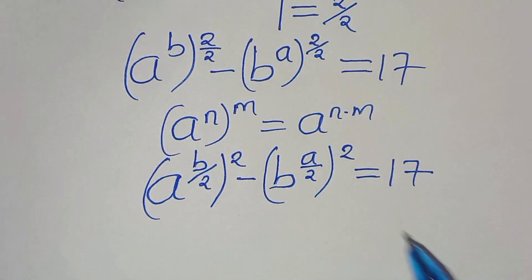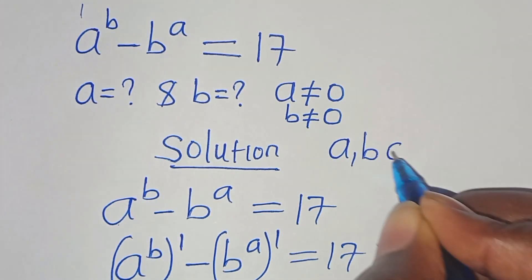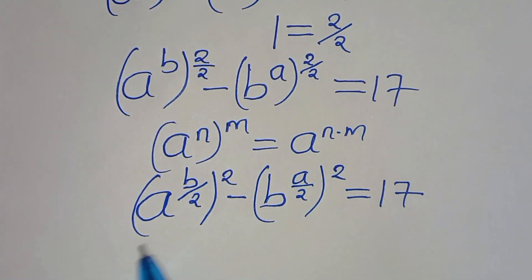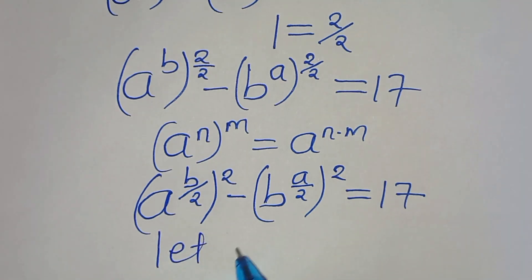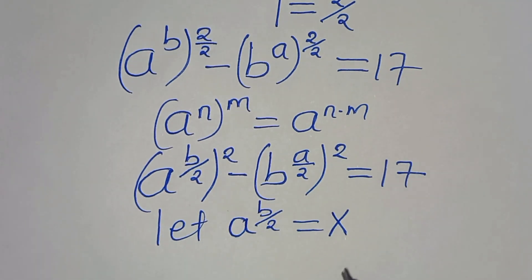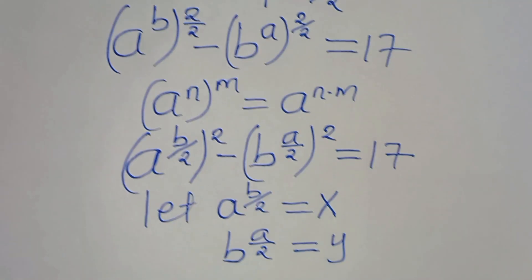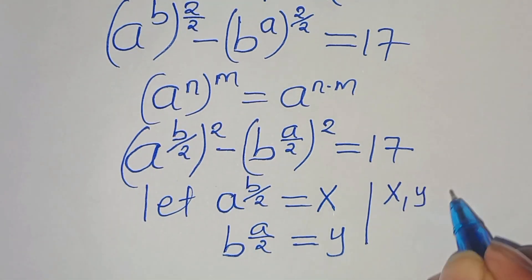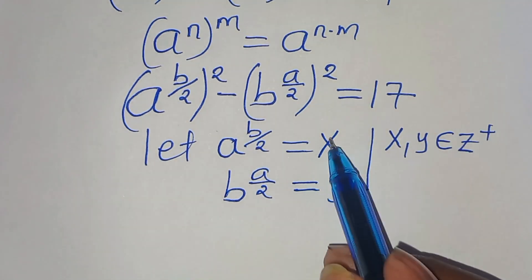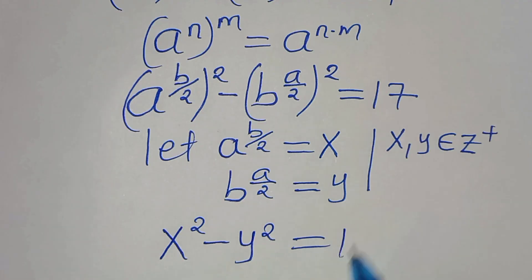Now, the next step from here we have to note that a and b are members of positive integers. From here we can let a to the power of b over 2 equal to X, and b to the power of a over 2 equal to Y, given that X and Y are also members of positive integers. So substituting X and Y into the equation we have X squared minus Y squared equal to 17.